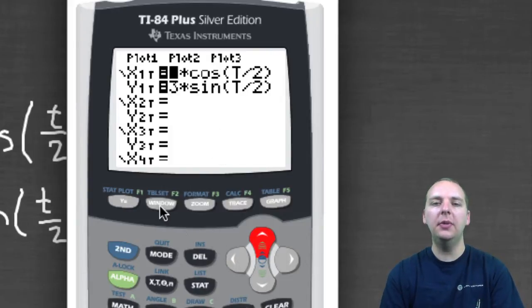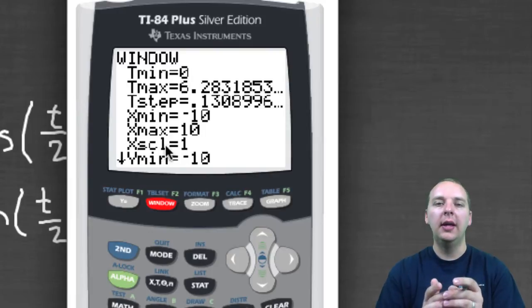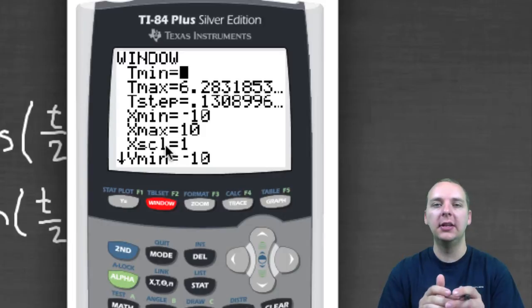Now before I graph it, let me just take a look at the window, just so I can see what's in there. Some stuff will look familiar, for example the X min and the X max, we're familiar with those, that's the X viewing window, and the Y min and Y max is how much of the Y axis you're seeing, and together those will make your viewing window.